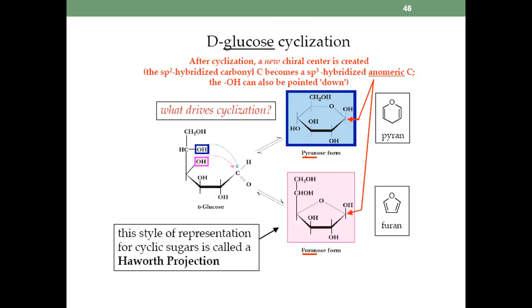The mutarotation of glucose: you can form the six-membered ring, the pyranose, but you can also form a five-membered ring, the furanose. The most stable, however, is the pyranose. For glucose, we normally use the OH from carbon 5 to obtain the six-membered ring, but you can also use the OH from carbon 4 to attack the carbonyl carbon to get the five-membered ring.